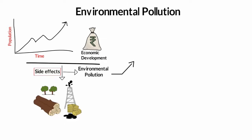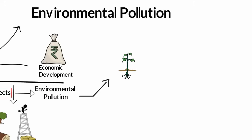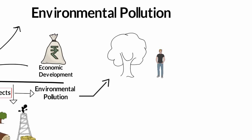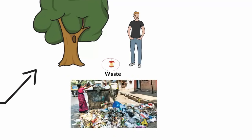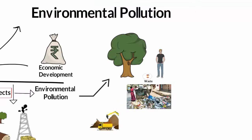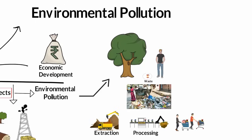Now how does environmental pollution occur? In the most basic sense, let's assume there is a plant and a human being. The law of nature says both have to grow with time. So the plant grows into a tree and starts developing fruits, and the human being grows into an adult. Humans need food, so they go and pluck a fruit from the tree, eat it, and throw the uneaten part. That uneaten part becomes waste and mixes with the environment, giving rise to different forms of pollutants. Likewise, there are many ways in which waste products may be generated during the extraction of raw materials, the processing of raw materials into final products, and also during consumption.